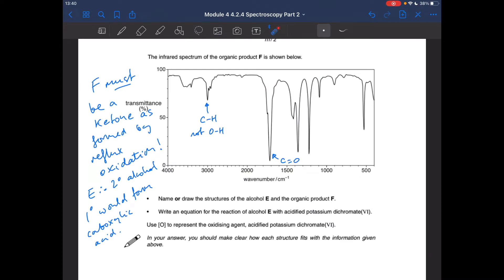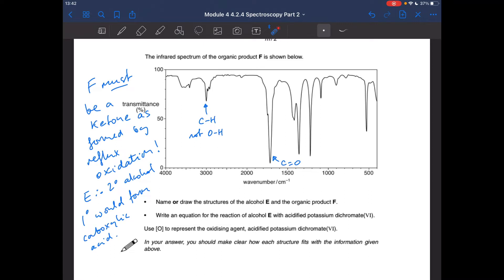Okay, so moving on to the infrared spectrum of product F. So remember, this is formed when alcohol E is oxidized. There's two areas really to focus on. This peak here is important. So that's at around about 1700 cm⁻¹. Strong absorption, almost goes to the bottom. That indicates the presence of a C=O. So, then we go to around about 3000, 3500.